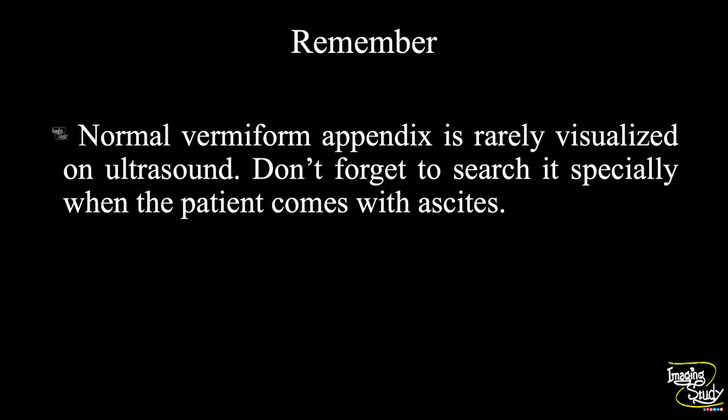Now the take-home message. The normal vermiform appendix is rarely visualized in regular ultrasound. Here is a short trick for beginners: don't forget to search for the vermiform appendix especially when the patient comes with severe ascites. You may see the vermiform appendix at the right iliac fossa due to the large adjacent collection.